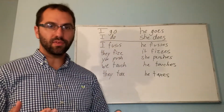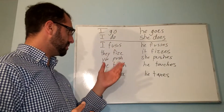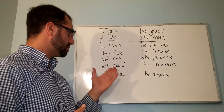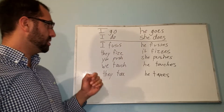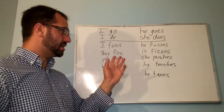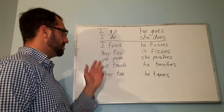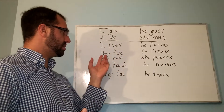Next, if we have a verb ending in S, Z, SH, CH, or X, what we're going to do is add an ES to the end. So I fuss becomes he fusses.